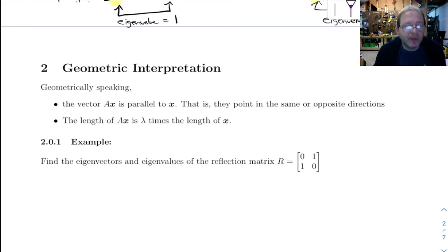All right, let's look at the geometric interpretation of eigenvalues and eigenvectors. So the definition says A⃗x equals lambda⃗x.